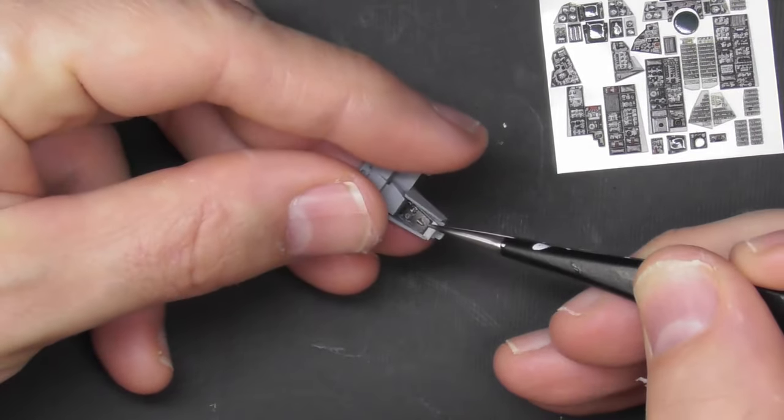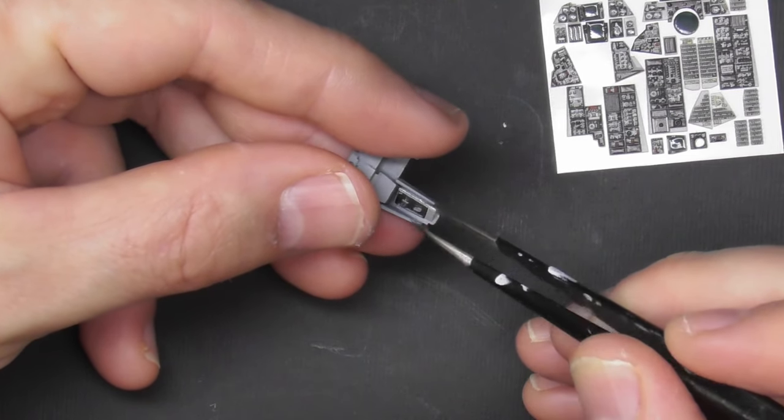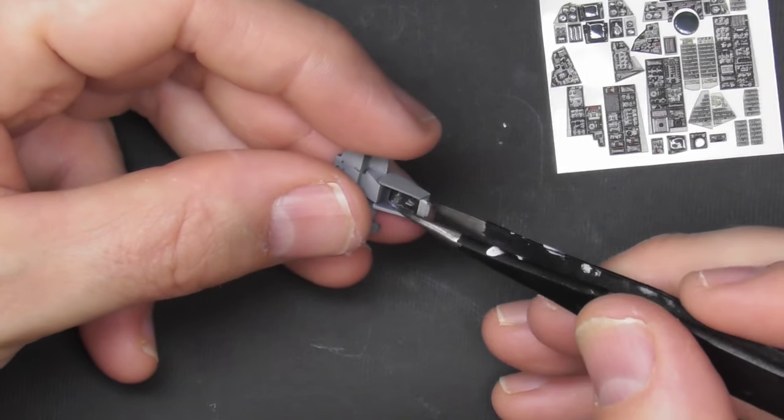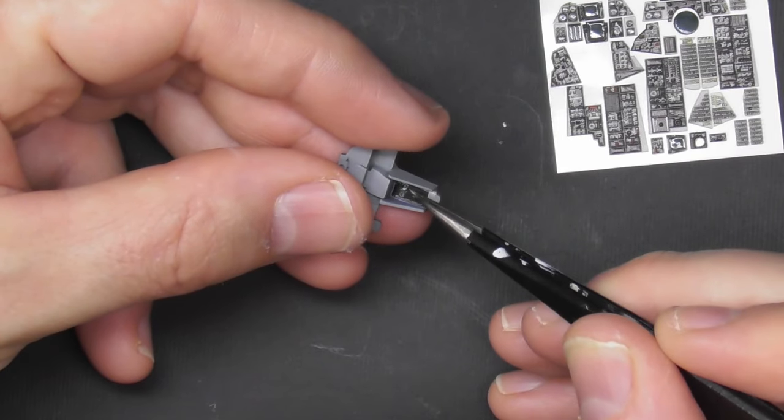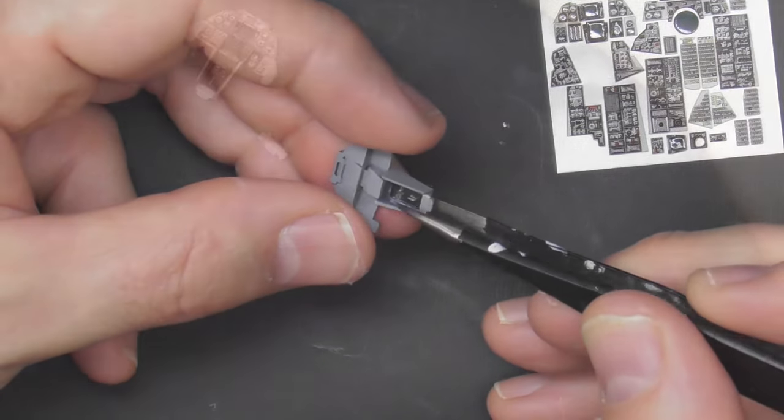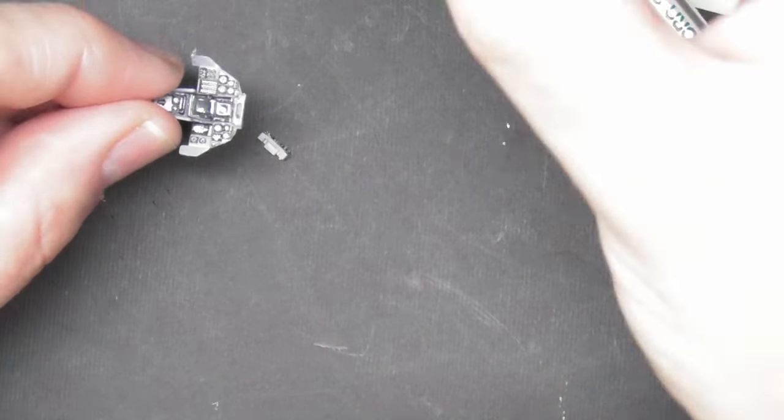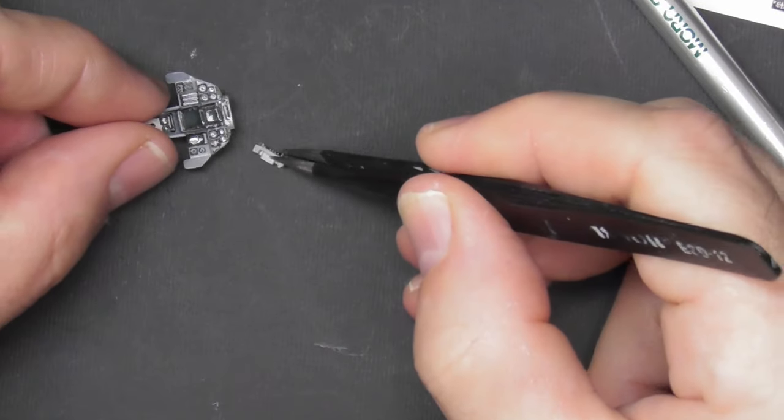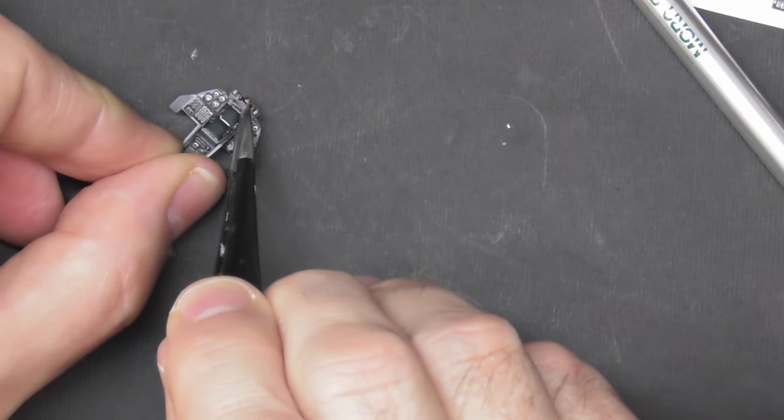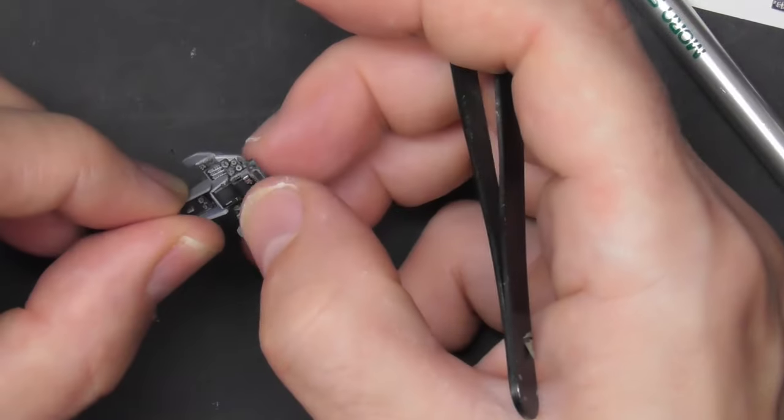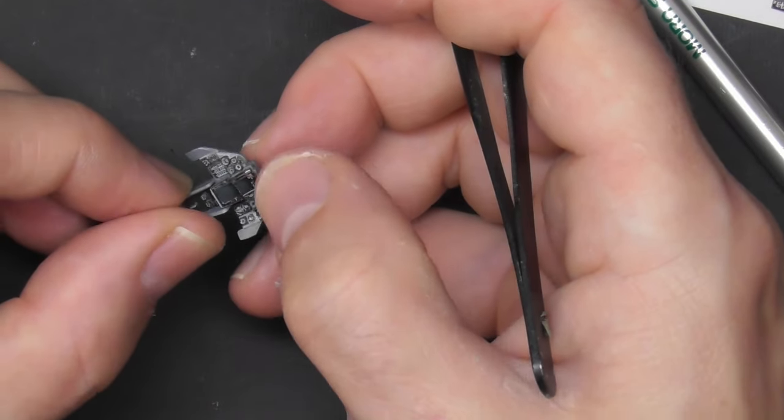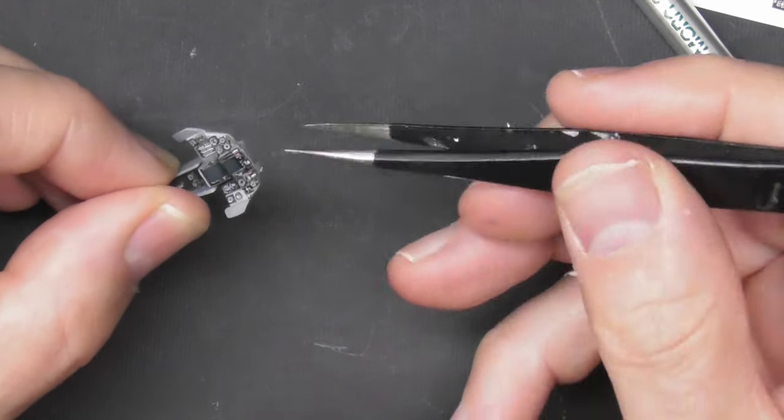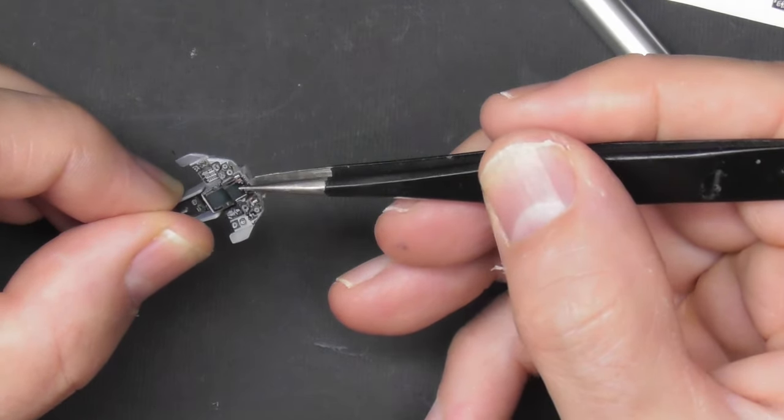I'm just using the tweezers to peel off the bits. It's just a question of peeling them off and sticking them on. The advantage of the Red Fox system is, as I said, it's acetate. So it's solid and it's hard. No soaking required. It's not a decal. And I do prefer this system. Some people prefer Quinta Studios. They think the printing is better. To be honest, I can't see much in it myself. I just find this an easier system.